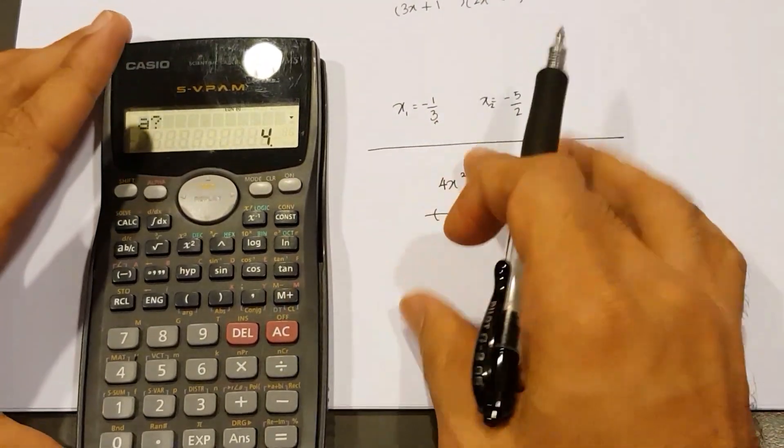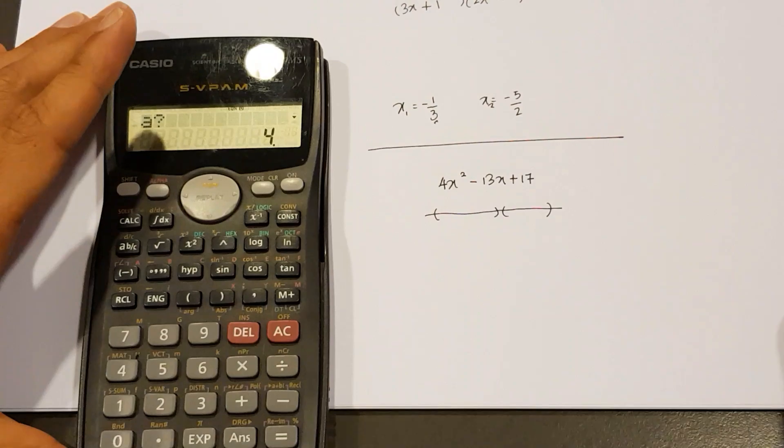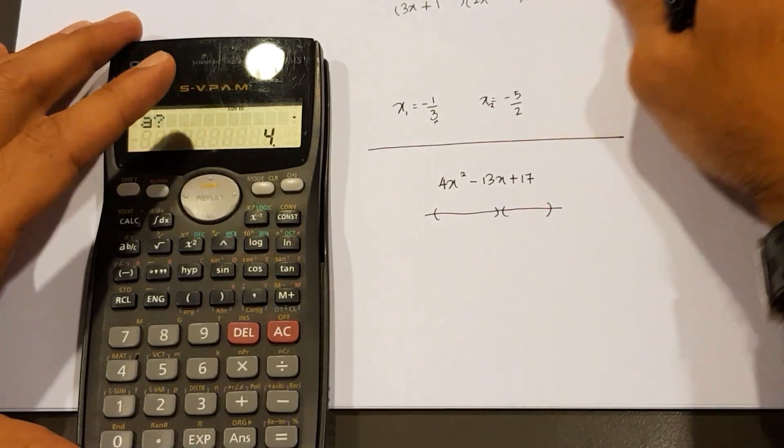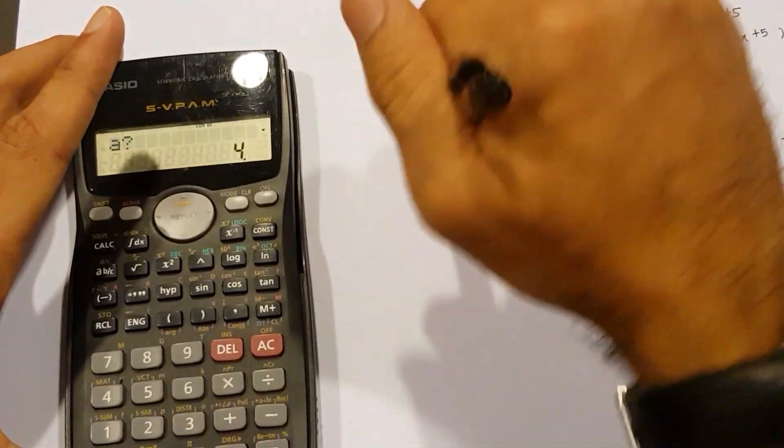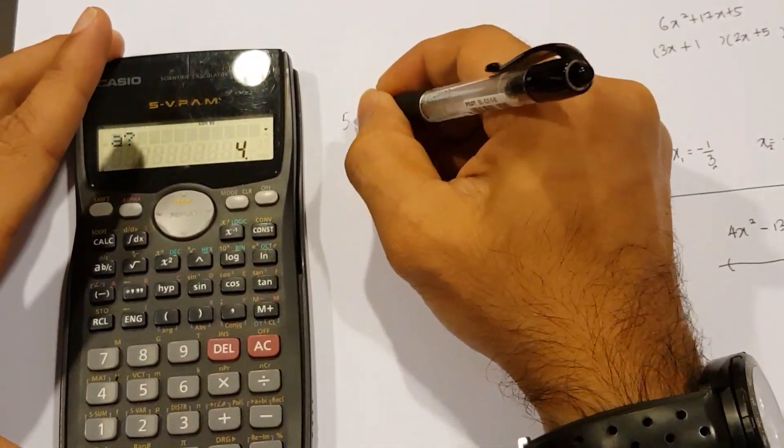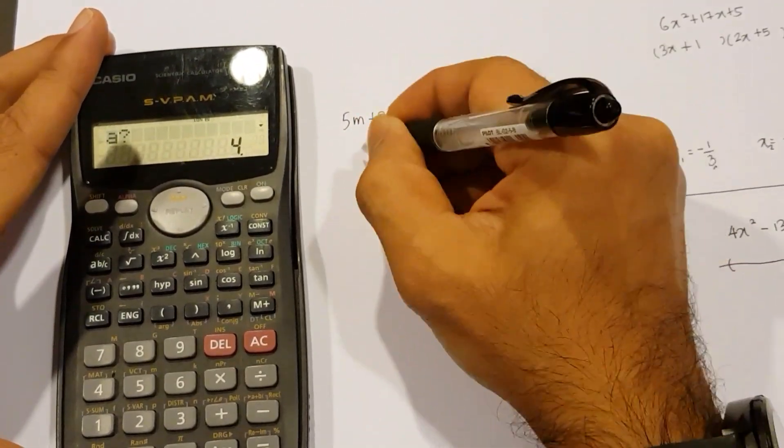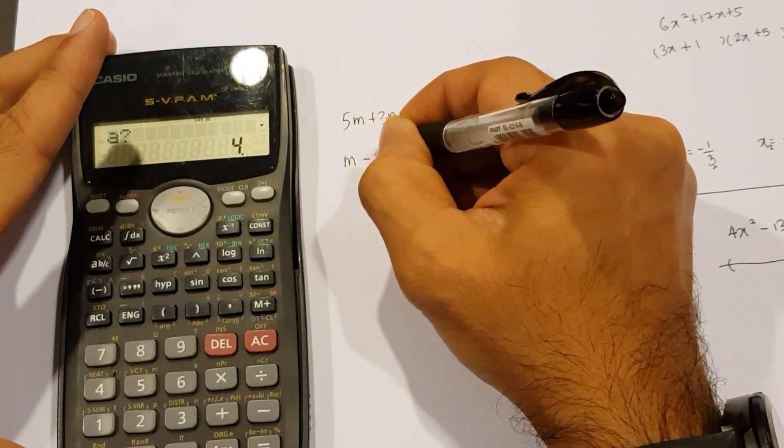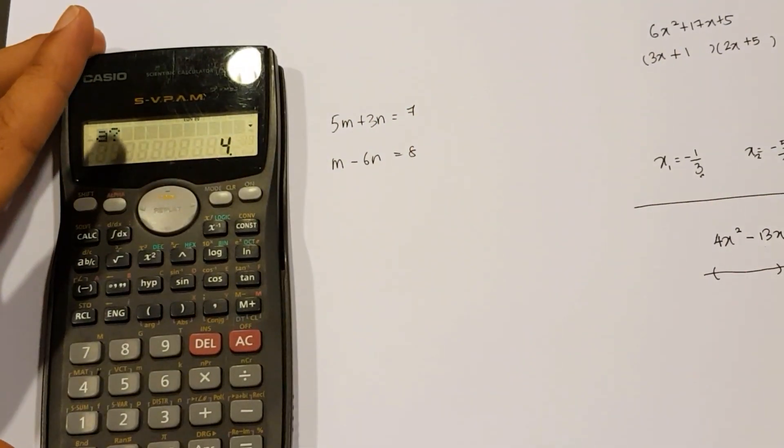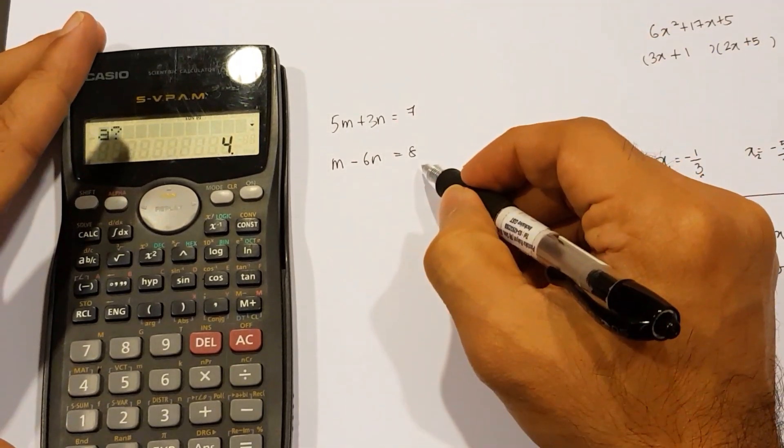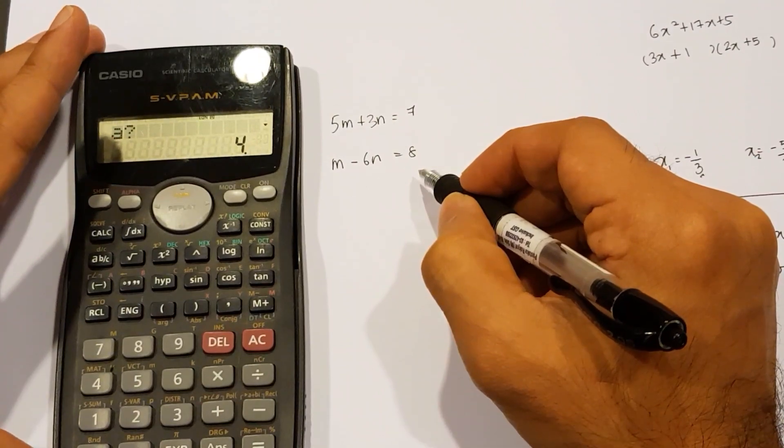Now I'm also going to do this next part where we're going to perform simultaneous solutions since we are using this 570 MS calculator. Suppose we have this simultaneous equation given to us, 5M plus 3N equals 7, and M minus 6N equals 8. Obviously, when you do your exam questions, you will need to show the working, but I'm just going to show you guys how you can use a calculator to check your answers.